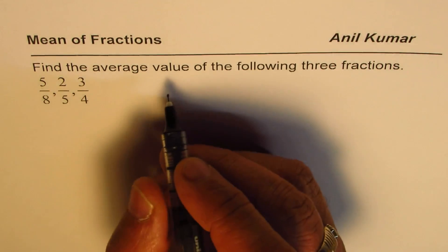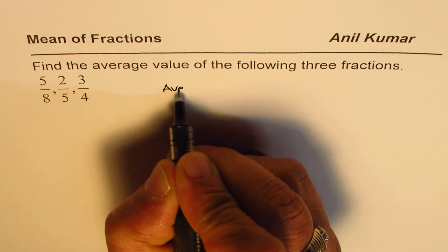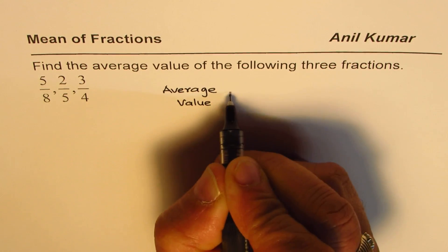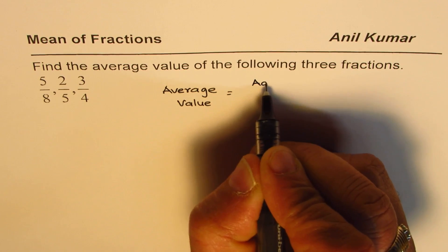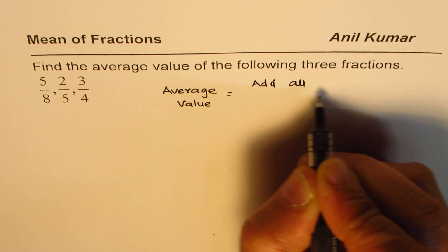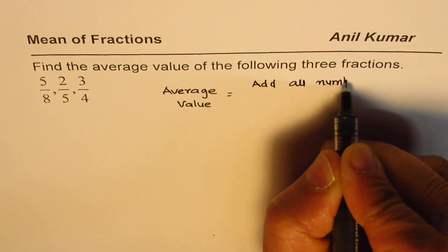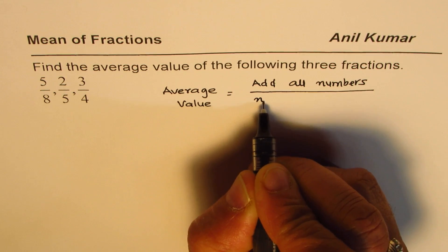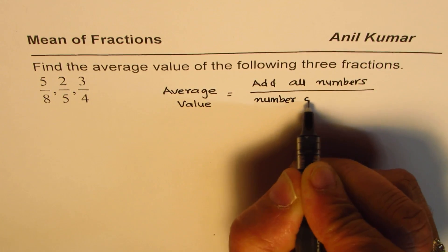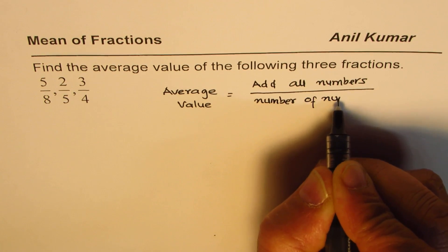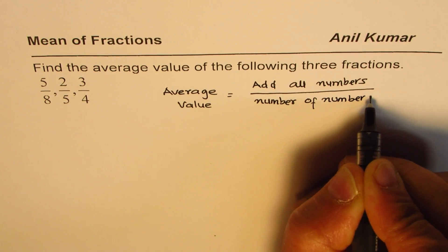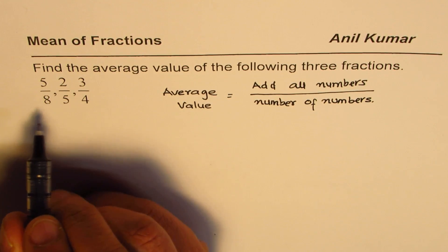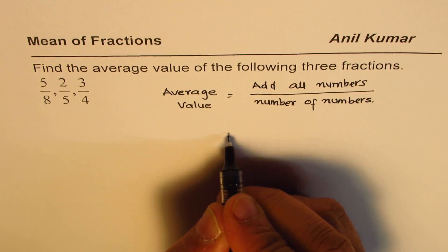So to find average value you need to add all numbers and then divide by number of numbers. In this case we are given fractions, so basically what you need to do is to add these three fractions.